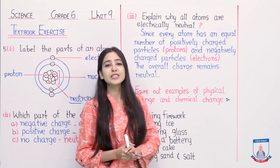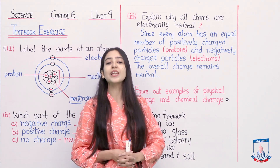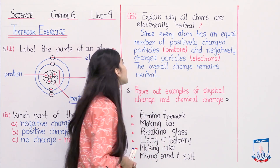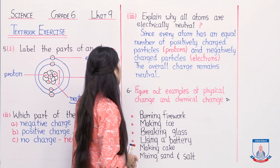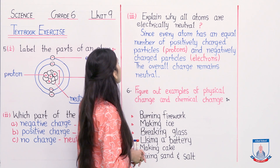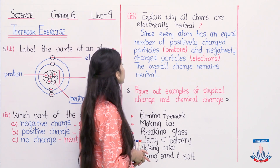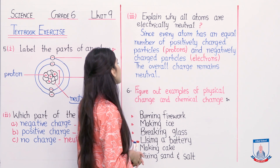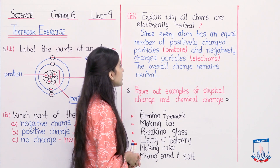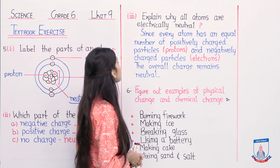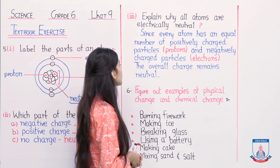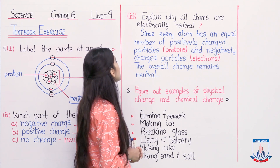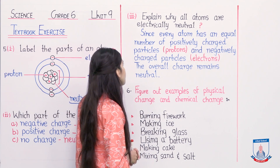First I will read out the answer for you, then I will explain. Since every atom has an equal number of positively charged particles - protons - and negatively charged particles - electrons - the overall charge remains neutral.